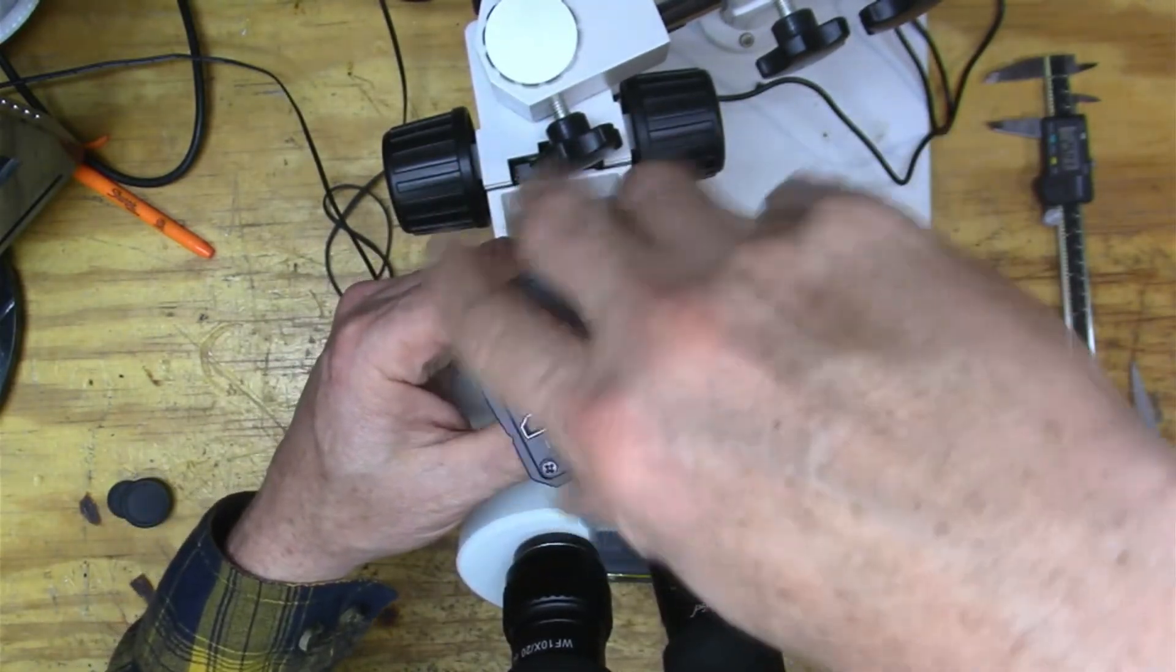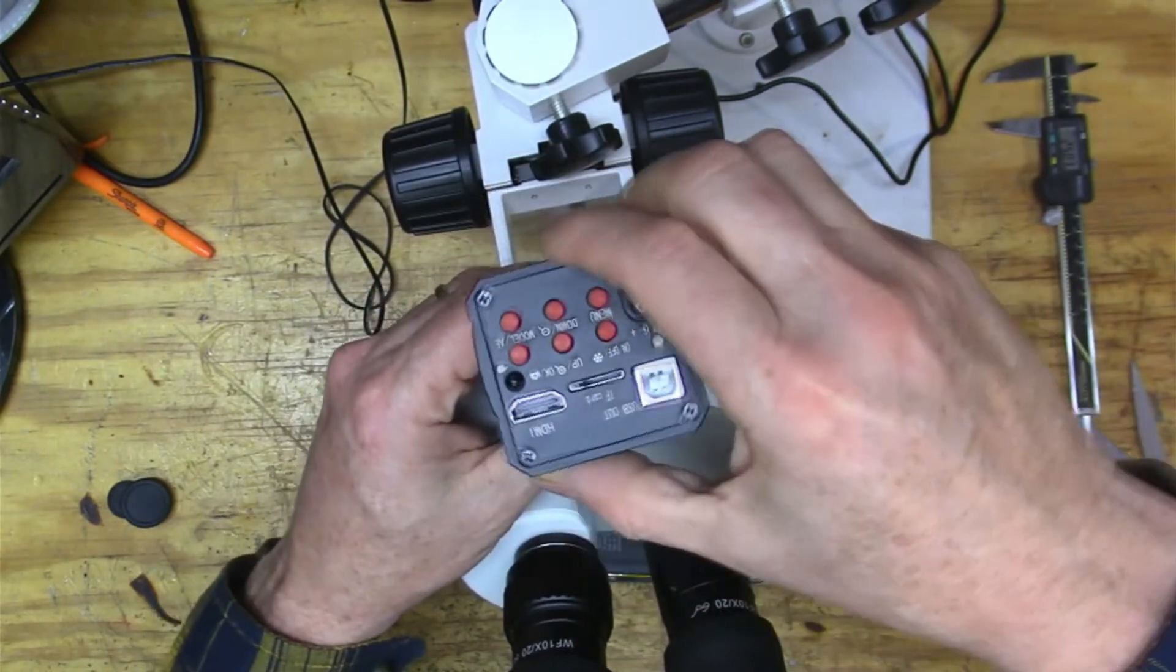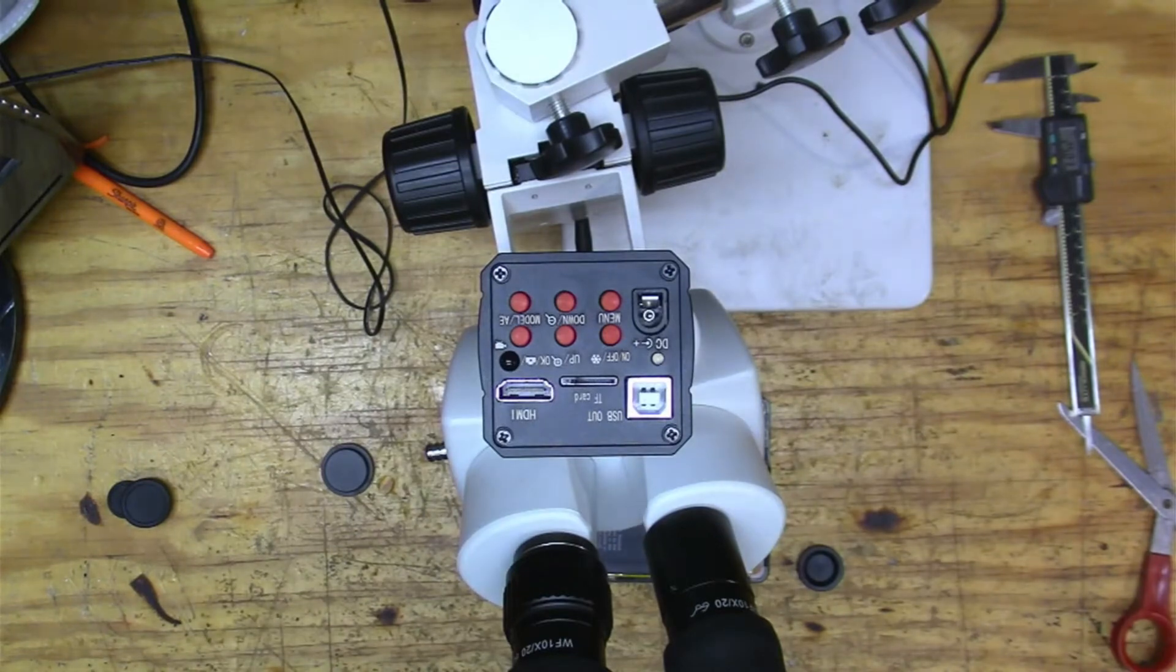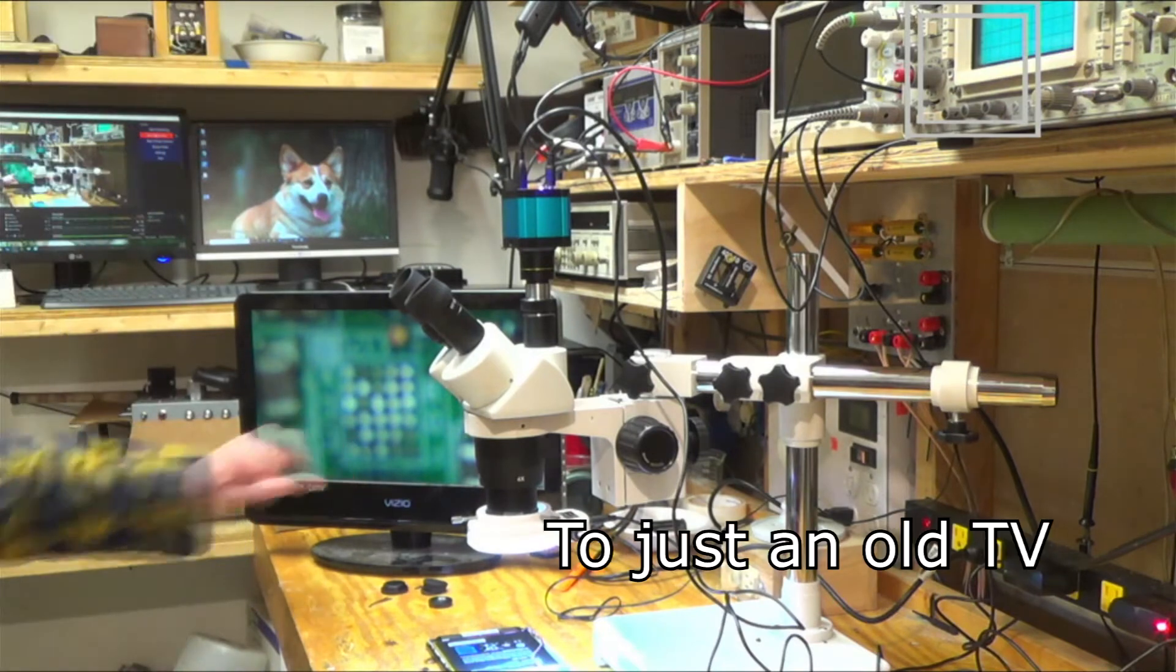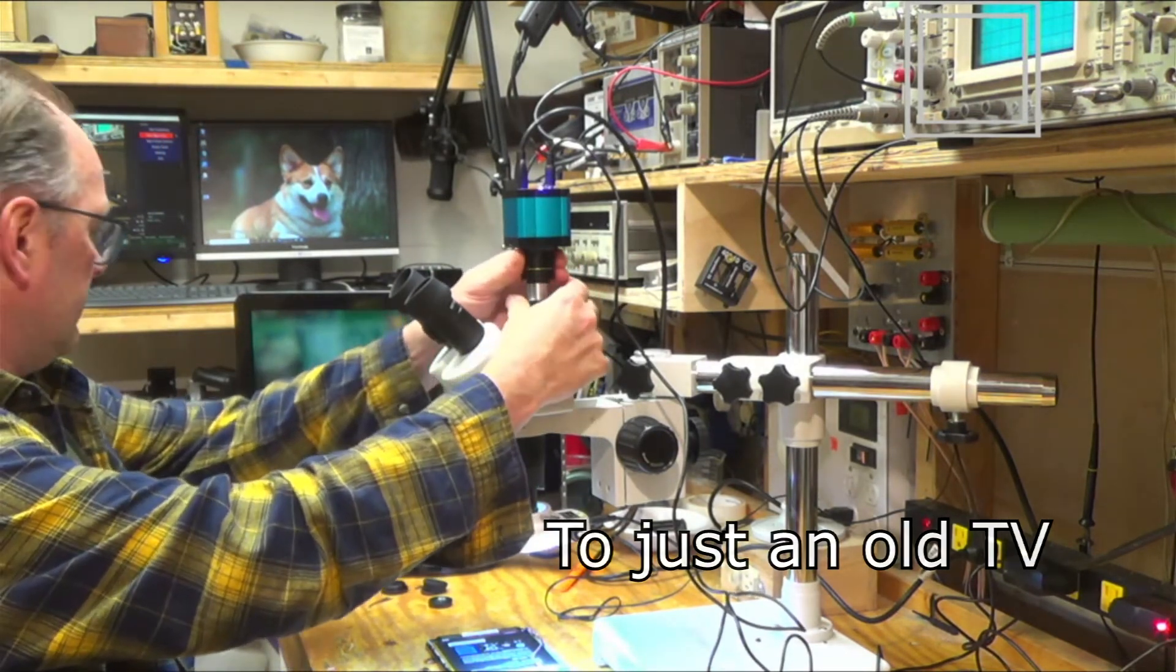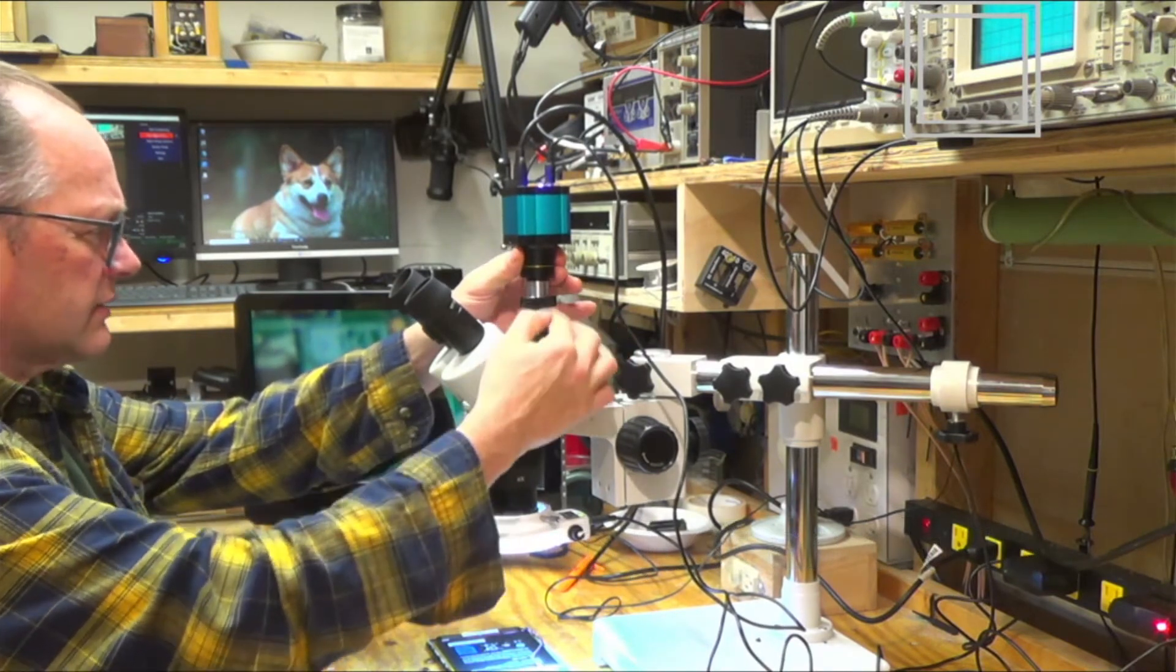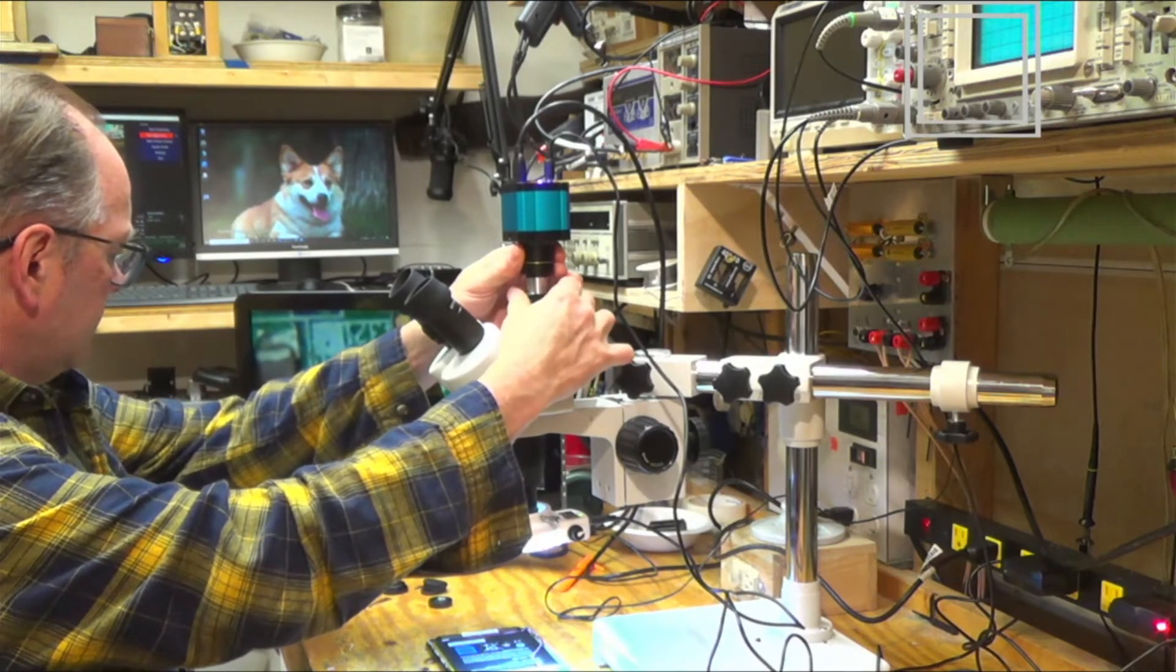I just got to screw that on there. And I think type C is kind of a standard camera mount. All right, so there, we got that on there. All right, so there, there we have our image coming in. And so now we just turn this guy here. And like I said, this barrel came with the microscope. Turn that out.